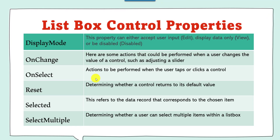These are the key properties of a ListBox control. Display Mode: this property can either accept user input, display data only, or be disabled. OnChange: some actions that could be performed when a user changes the value of a control, such as adjusting a slider.